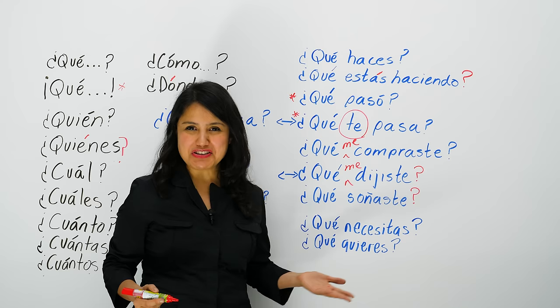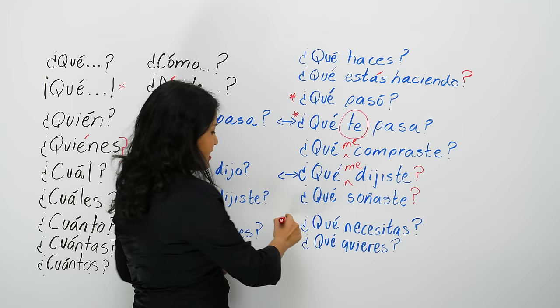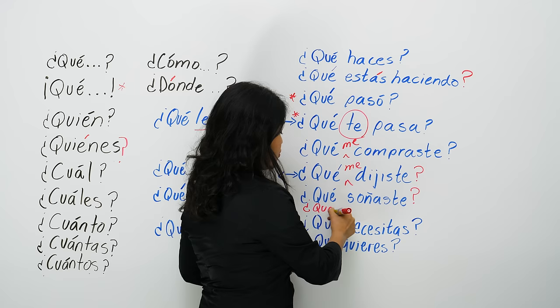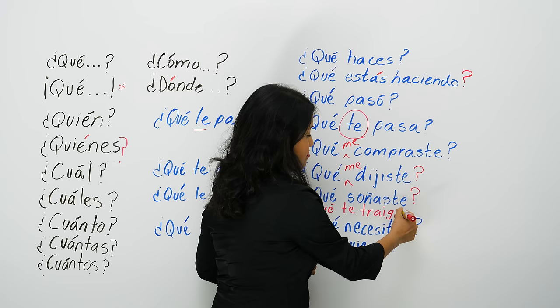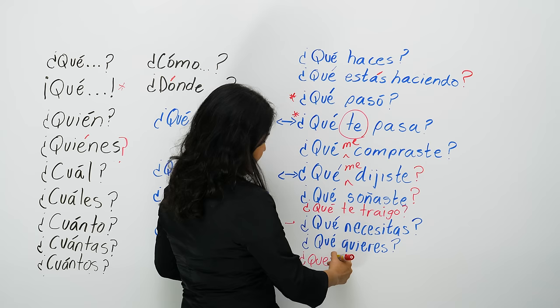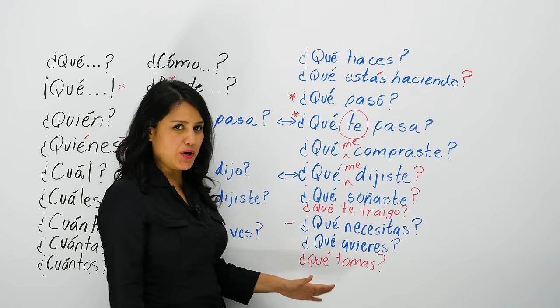'Qué soñaste' — what did you dream about. I sometimes remember my dreams and I always like to hear someone else's dreams: qué soñaste. Also: 'qué necesitas' — what do you need. 'Qué te traigo' — what should I bring for you. Maybe you invite someone to your house and ask 'qué tomas' — what are you drinking, or qué te traigo.